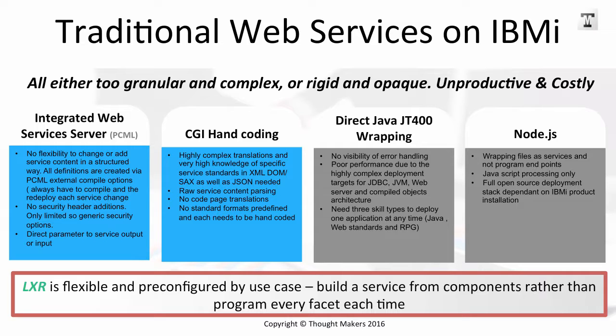Some examples: the integrated web services server using PCML is very rigid. CGI hand coding can be very complicated — you've got to know everything about XML parsing, JSON parsing, handshaking, HTTP header requests, SSL, etc., just to write an application, and you've got to code it that way every single time.